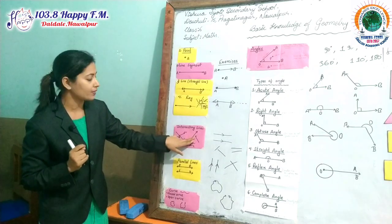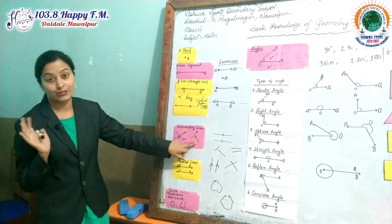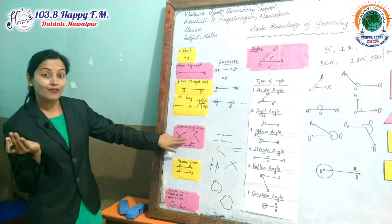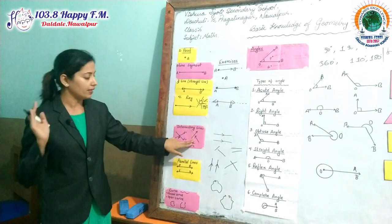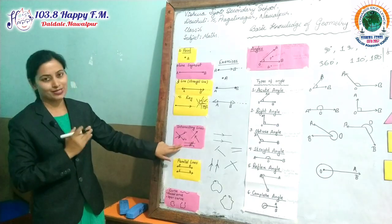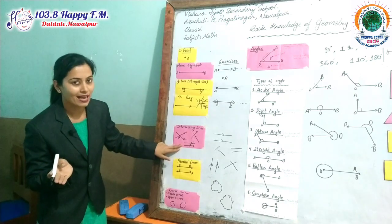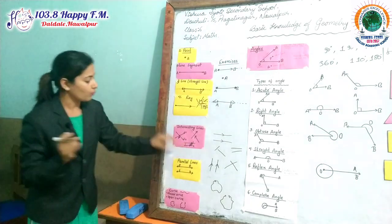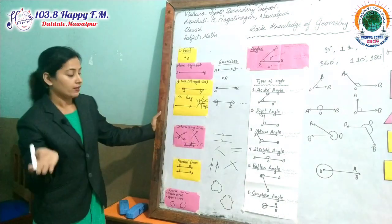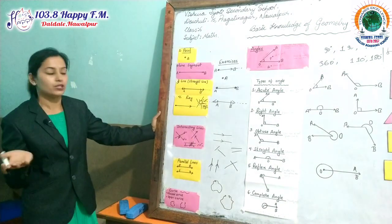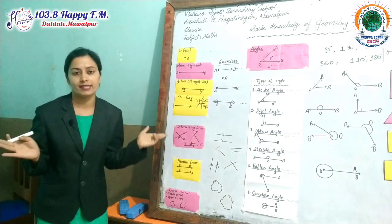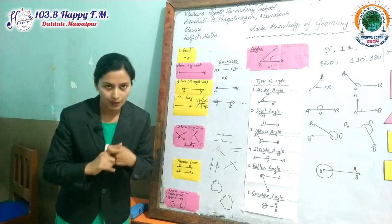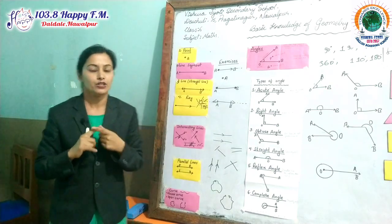Here is another example. The two lines are not meeting each other, but they are lines and they can be extended. When we extend them, they may meet at one point — that's why it is also an intersecting line. The next one looks like a parallel line, but it is also an intersecting line because the distance between the two lines is not the same. When we extend them, they may meet at one common point. When two lines make a common point and meet, that is an intersecting line.